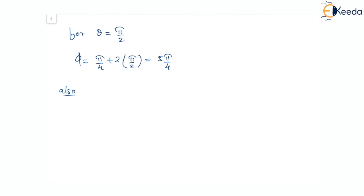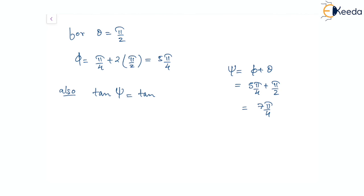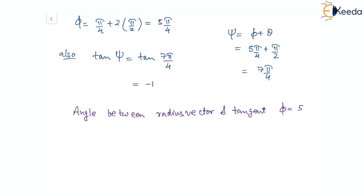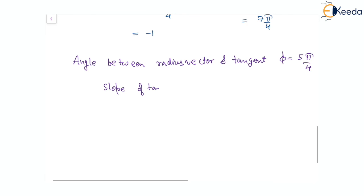Now looking for the slope of the tangent, that is tan(ψ). The angle ψ = φ + θ = 5π/4 + π/2 = 7π/4. So the slope of the tangent, tan(ψ) = tan(7π/4) = −1. Therefore, the angle between the radius vector and the tangent is φ = 5π/4, and the slope of the tangent is −1.